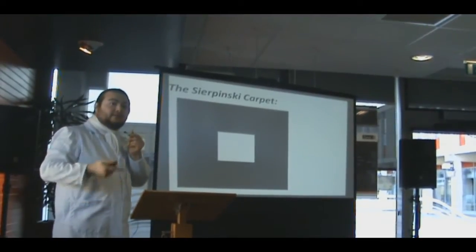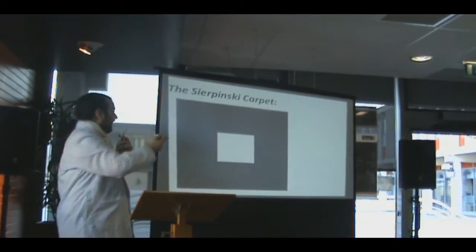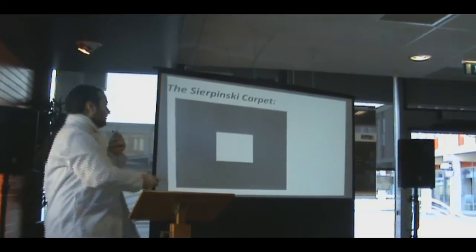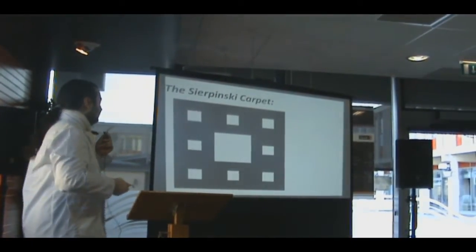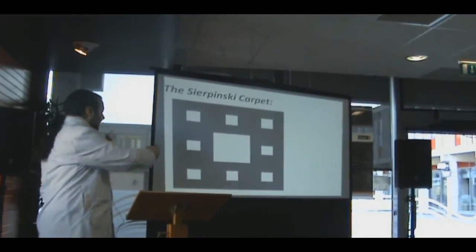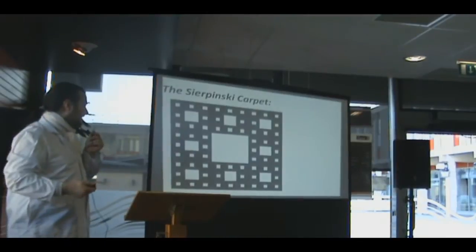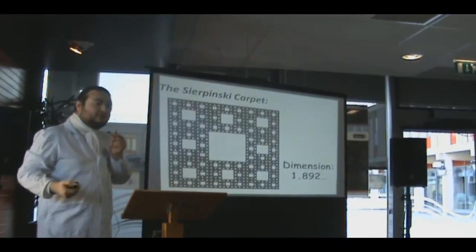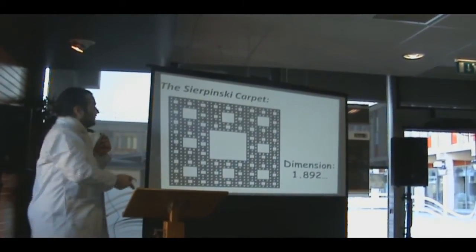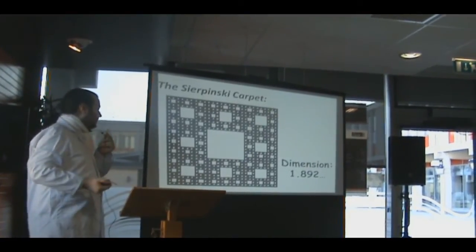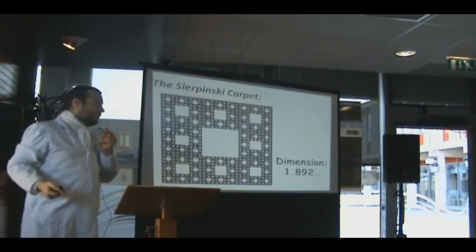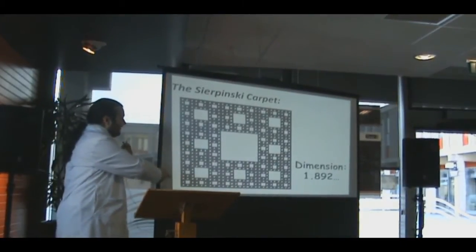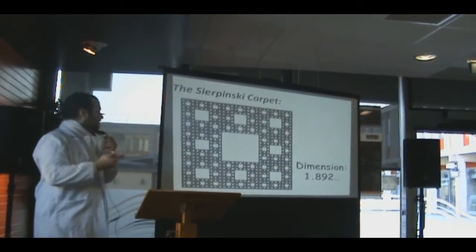At each step of the algorithm, you take any black square that's left and drill another white hole in the middle. So we go from a black square with one hole in it, to having eight surrounding squares, and then more squares. Eventually, there are so many holes that once you reach infinity, this shape doesn't even have any area. It's a 2D shape with a dimension less than 2 — in fact, this dimension is about 1.892. There's just no area; every point is just a point, with no solid line running through.